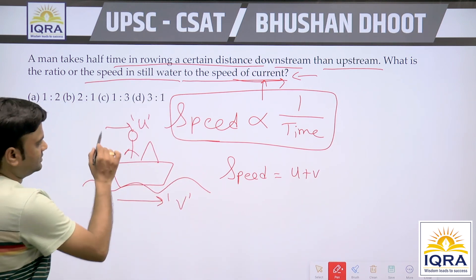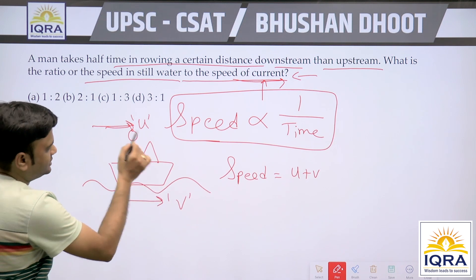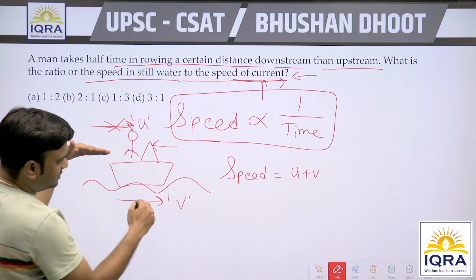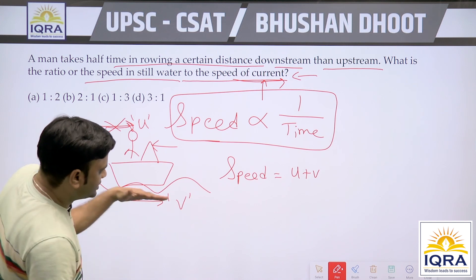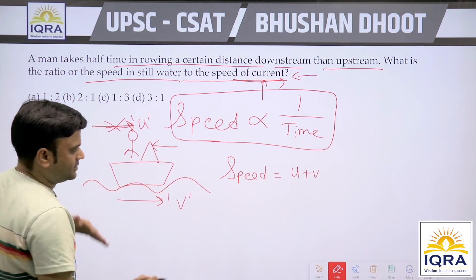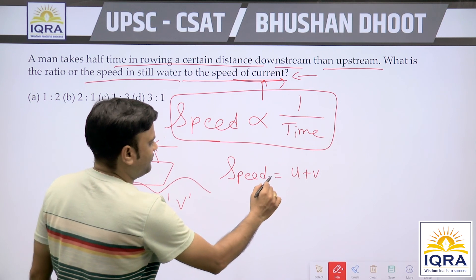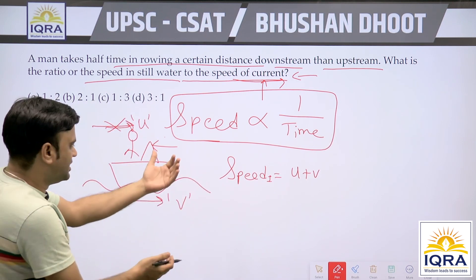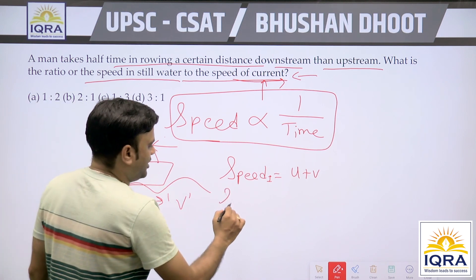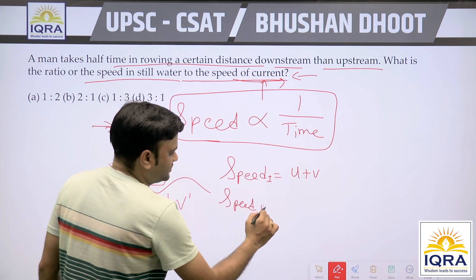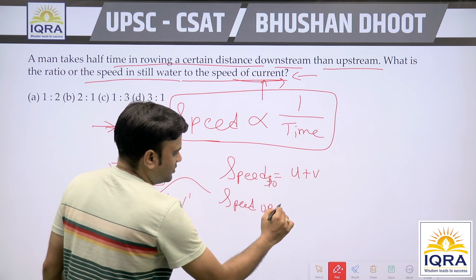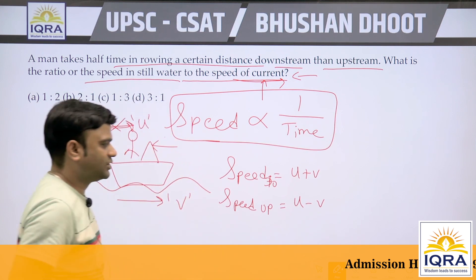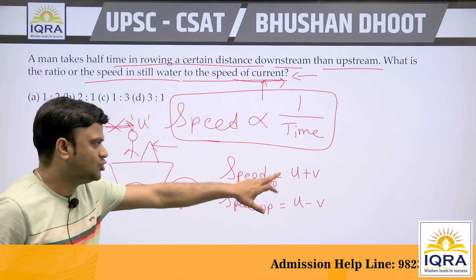If the person is rowing opposite to the stream, the force of the stream will oppose the speed of the person. The first case — rowing with the stream — is known as downstream. The second case is known as upstream. The speed downstream is U plus V, and the speed upstream is U minus V.